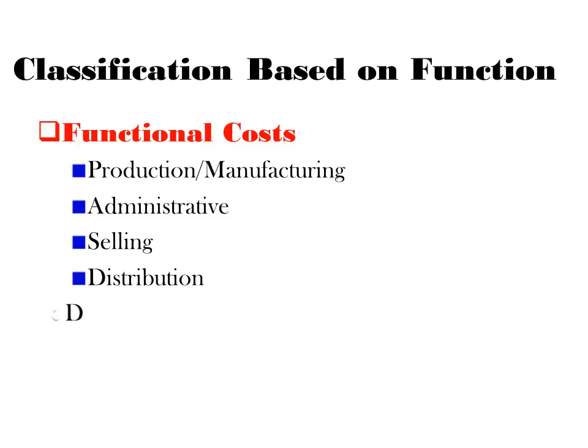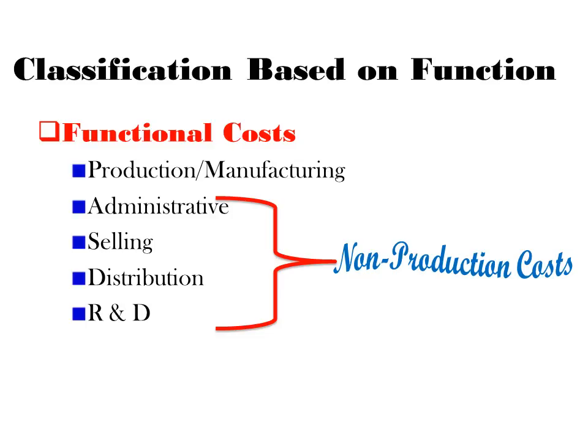Next, we have research and development costs — costs incurred to improve the quality of a product, unique to some organizations such as those in the chemical industry. Administrative, selling, distribution, and R&D costs combined are referred to as non-production costs. So our functional costs fall into two sets: production costs on one side, and non-production costs — admin, selling, distribution, and R&D — on the other.